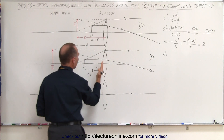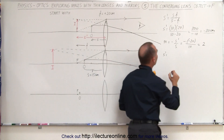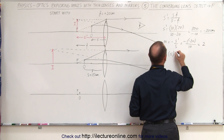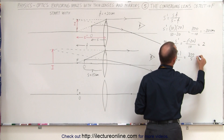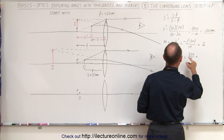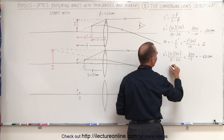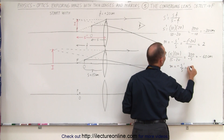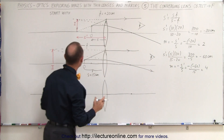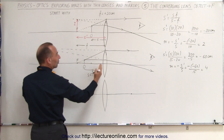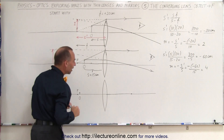Again we'll calculate the position of the image: S' equals S times f over S minus f. In this case let's make the distance 15 centimeters, placing the object at the three-quarter mark between the lens and the focal point, so S equals 15 centimeters. Plugging that in: 15 centimeters times 20 for the focal length, divided by 15 minus 20, which is 300 divided by minus 5, which is minus 60 centimeters. The magnification is minus S' over S, which is minus times minus 60 over 15, giving a 4 to 1 ratio. That means the image will be four times as large as the object, at a distance of minus 60 centimeters — 60 centimeters in front of the lens, four times the object distance.